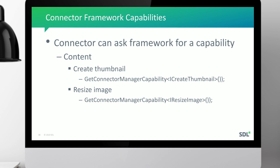The connector itself can also ask the framework for a capability that the application can provide — for example, creating thumbnails or resizing images. The connector can ask 'is this capability available?' and if yes, use it. This is quite a nice bidirectional capability mechanism. It's up to the application using the integration framework to supply these capabilities — for example, on ECL it could use ECL resizing, while on the delivery side it could use dynamic image delivery instead.